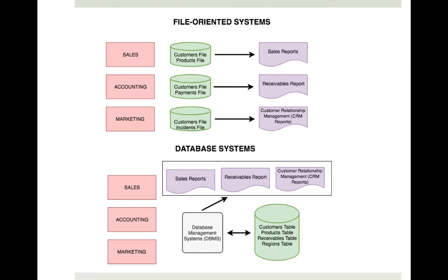The best way to understand a database is to contrast it with a file system. In a file-oriented computer system, each program that is used in the organization maintains its own data. The same data might be used in different programs to produce reports. This often results in duplication of data.